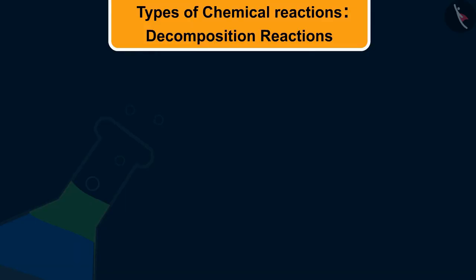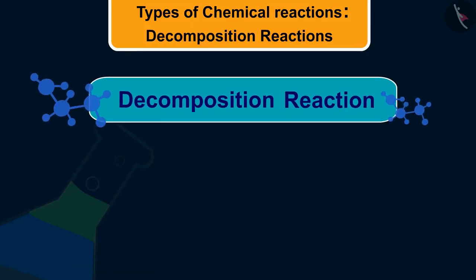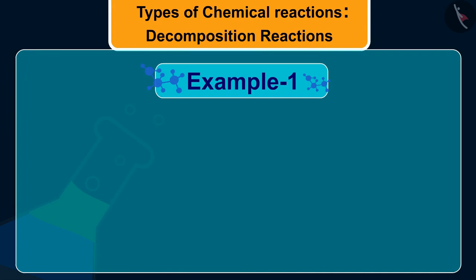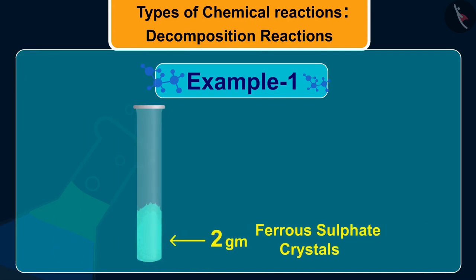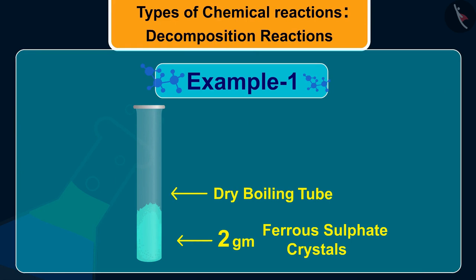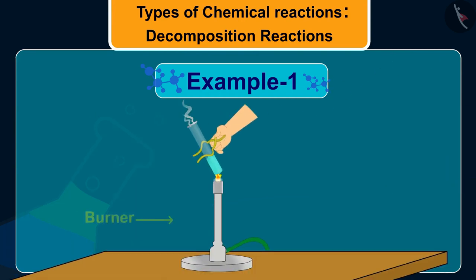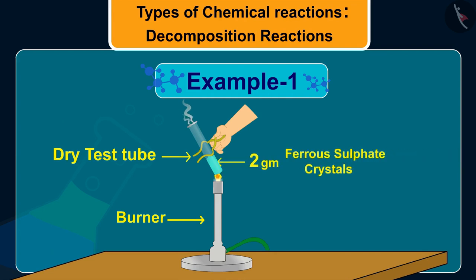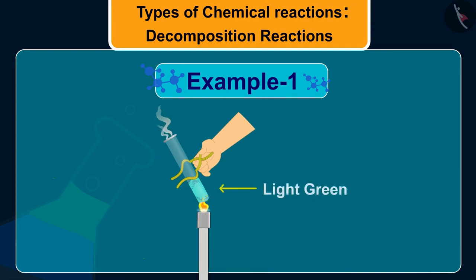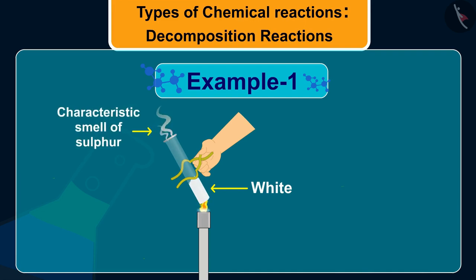Let us take an example of decomposition reaction. Take about two grams of ferrous sulfate crystals in a dry boiling tube. Note the color, now heat this and observe the color of crystals after heating. You will observe that the color of ferrous sulfate changes from light green to white. You will also observe a characteristic smell of sulfur.